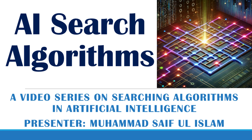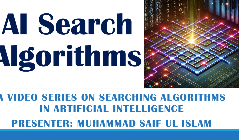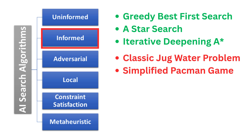Assalamualaikum, welcome back to my video series on searching algorithms in artificial intelligence. So far we have completed the uninformed search and informed search algorithms. We discussed A* in the previous video, which is one of the most powerful and widely used pathfinding algorithms in artificial intelligence and problem-solving. In this video we will implement A* search using two fun examples.